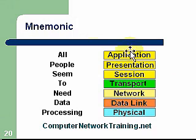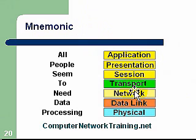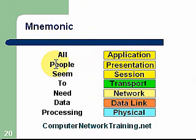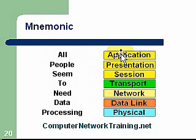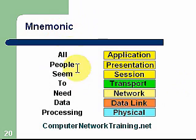A mnemonic to help memorize the layers: application, presentation, session, transport, network, data link, and physical. 'All People Seem To Need Data Processing' — using the first letter of each word: A for application, P for presentation, S for session, T for transport, N for network, D for data link, P for physical. If you can memorize this phrase, you can recall all seven layers. This is one mnemonic out of quite a few that have been created for this.